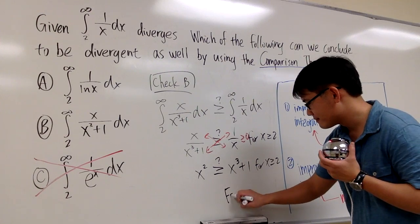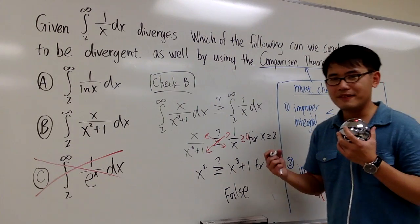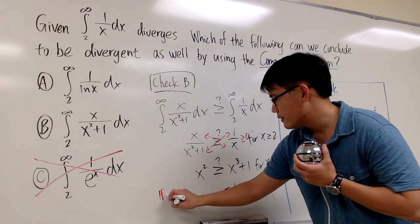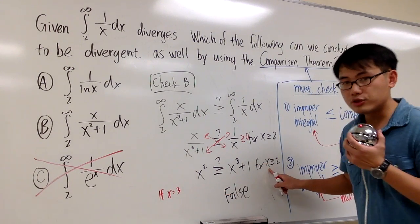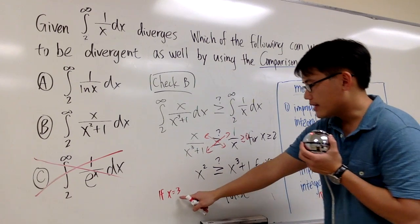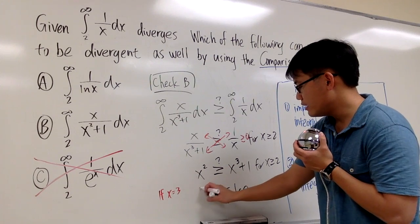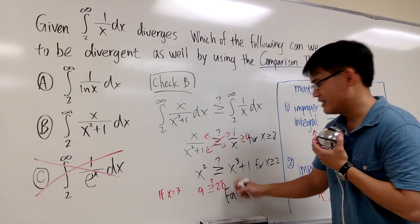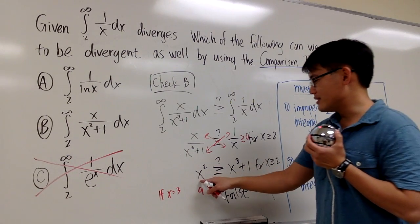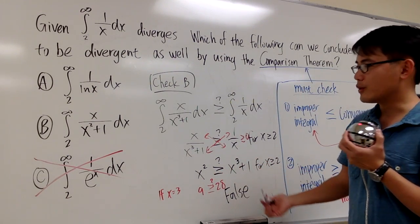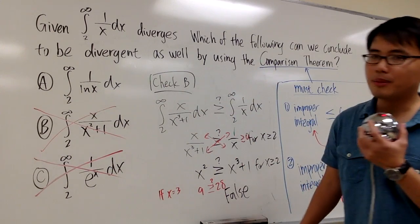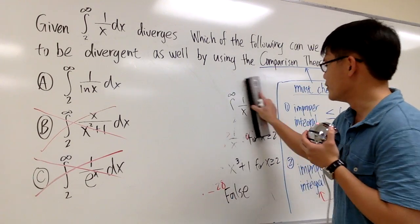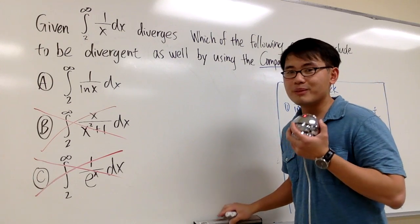This inequality x² ≥ x³+1 is clearly false. For example, if x = 3, the left side gives 9, but the right side gives 27+1 = 28. So x² is not going to be bigger than x³+1. I cannot draw any conclusion with the comparison theorem for choice B. In fact, both choice B and choice C converge — but we are just demonstrating the use of the comparison theorem.